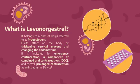Levonorgestrel belongs to a drug class called progestogens, a group of drugs used in female contraception. Drugs that fall under progestogens elicit an effect by thickening the cervical mucus to prevent the passage of sperm, and change the endometrium to reduce the potential for implantation. Some indications for levonorgestrel include emergency contraception, contraception as a component of combined oral contraceptives, and prolonged contraception as an intrauterine device.